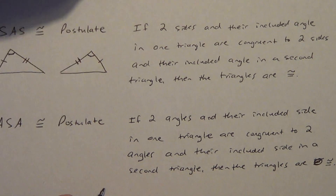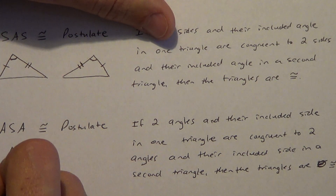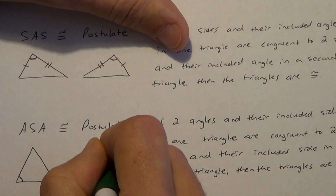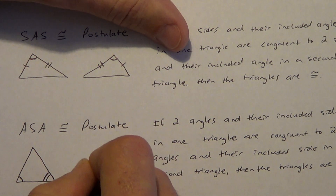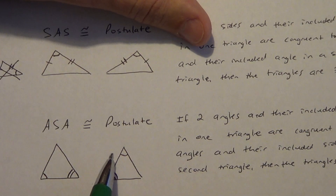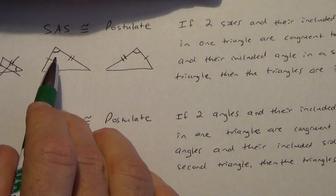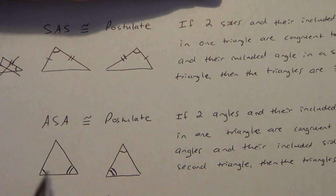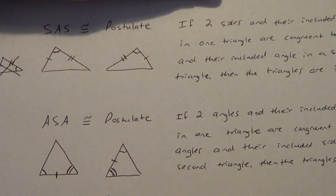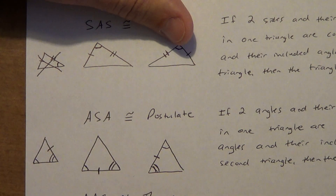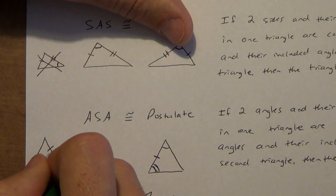Let me draw ASA. You've got one angle here and one angle here — the congruent angle marks are on each. The included side is the one stuck between the two angles. I'll show what ASA does not look like: if the side is not between the angles, we call that angle-angle-side, which we'll talk about next.